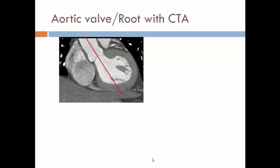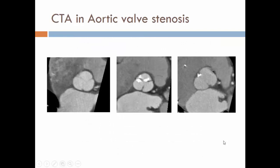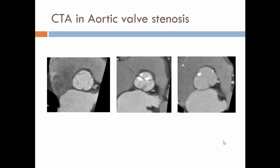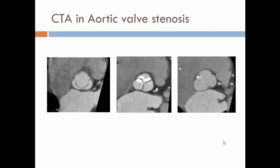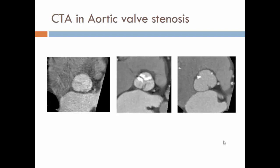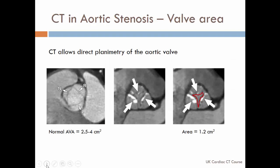To assess the aortic valve on CT, we create double oblique views through the aortic valve in a true short-axis plane. If the study was acquired in retrospective mode, the valve can be assessed as a moving object. The morphology of the aortic valve is so clearly demonstrated on CT that there is almost never doubt, although in very heavily calcified valves it may be difficult to distinguish a true bicuspid from a tricuspid valve with two fused cusps. In the majority of cases, however, the valve morphology is quite clear.